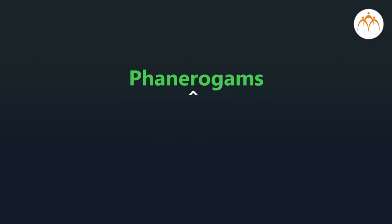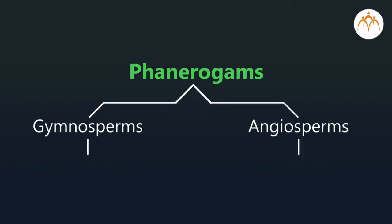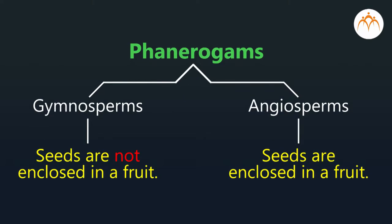Let's have a look at subkingdom Phanerogams — seed-bearing plants with whom we are most familiar. Depending on whether the seeds are enclosed in a fruit or not, they are divided into gymnosperms and angiosperms.